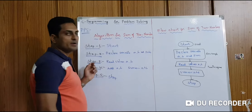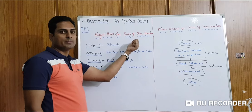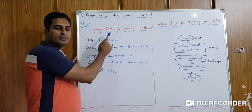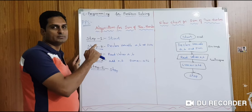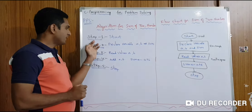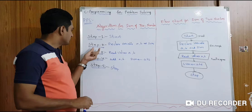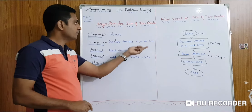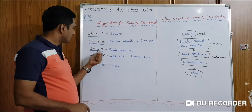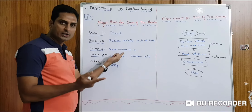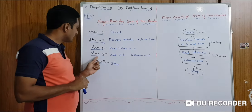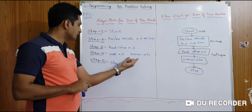Algorithm for sum of two numbers. Algorithm is a step-by-step English representation of a program. Step 1 is Start. Step 2 is declaration of variables — we declare variables A and B and a variable to store the sum. Step 3 is reading those values; if values are not given we scan them in a program, but here we write 'read values of A and B' in English. Step 4 is adding the two numbers, just like a formula.